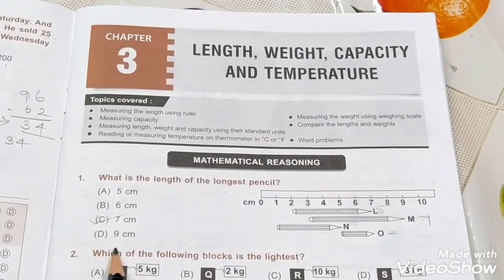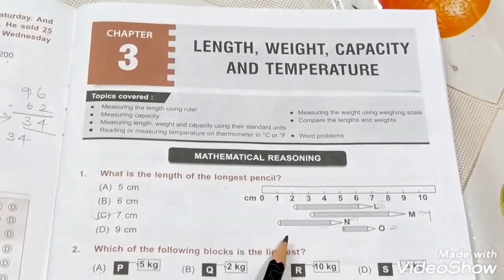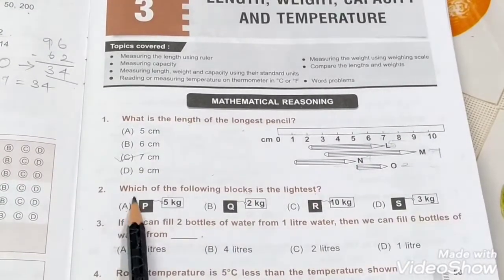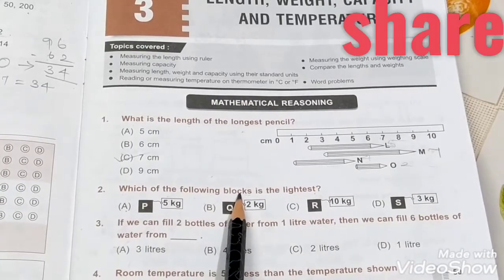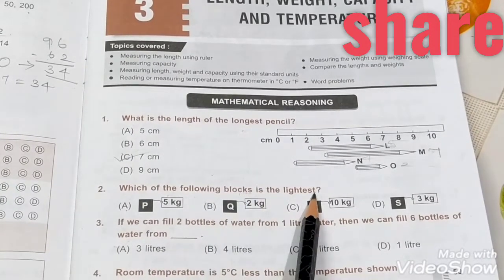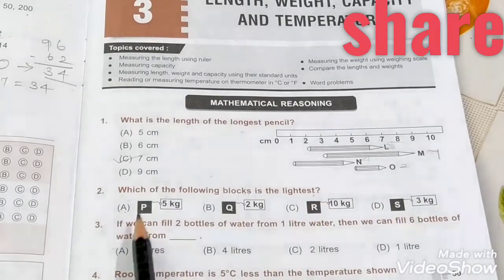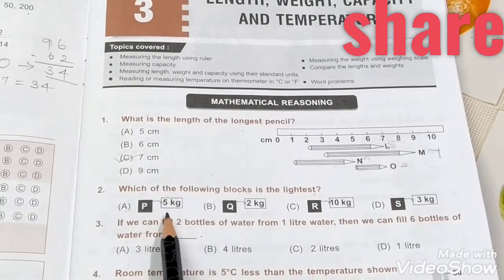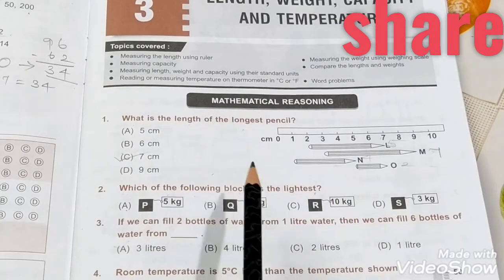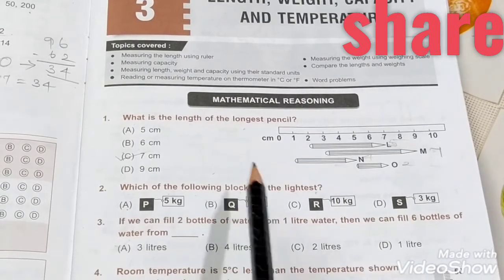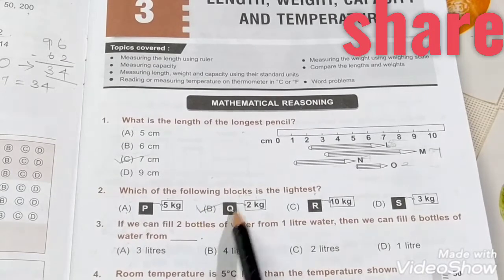Second question: which of the following blocks is the lightest? P, Q, R. They've given weights and also cages. Which is the lowest, meaning smallest weight? Q is equal to two kilograms. This is the correct answer. Lightest means smallest.